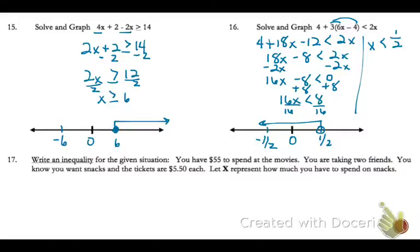So all together, there's three of you. Because it's two friends and yourself. So that means you're going to buy three tickets. So 3 times $5.50.